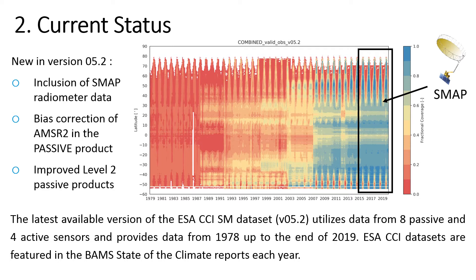The major improvements made in this version were inclusion of SMAP radiometer data for the first time, which led to a substantial increase in the spatial coverage in the latest period as you can see in the image, but also bias correction of AMSR2 in the passive product as well as an implementation of an improved soil moisture retrieval algorithm for all of the passive sensors. This data set covers a period from 1978 to the end of 2019.